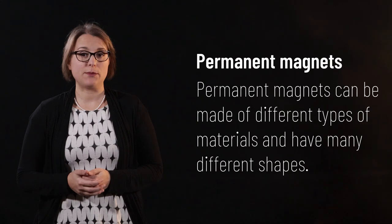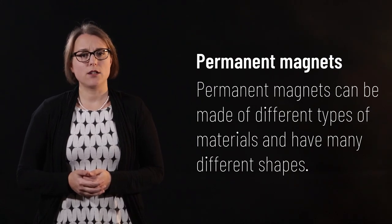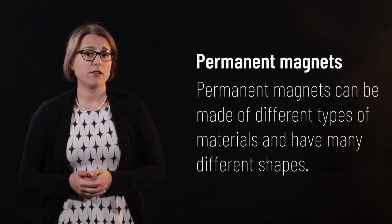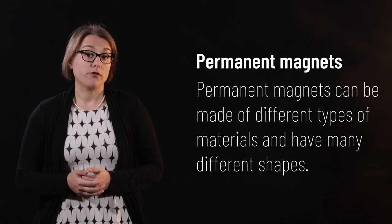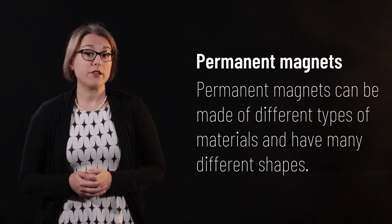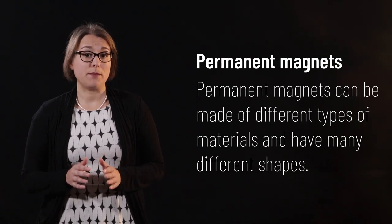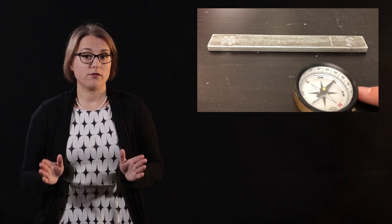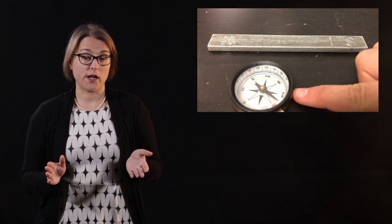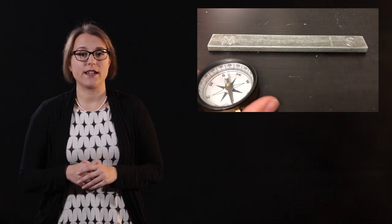Permanent magnets are made of different types of materials. Many low-cost magnets are made out of iron oxide ceramics. Rare earth metals are used to create very strong and small permanent magnets. Magnets also come in many different shapes and sizes. Previous demos in this video have used bar magnets. These are long rectangles with the north pole at one end and the south pole at the other end.